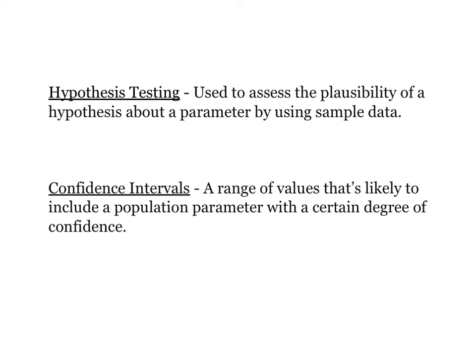Hypothesis testing is used to assess the plausibility of a hypothesis about a parameter using sample data. Someone will make a claim about what they think the population parameter is — a claim about a mu or a p — and then we're going to try to back up their claim or refute it based on sample data. We use what we know about sampling distributions to see if our samples support or reinforce those claims, which are called the hypothesis.